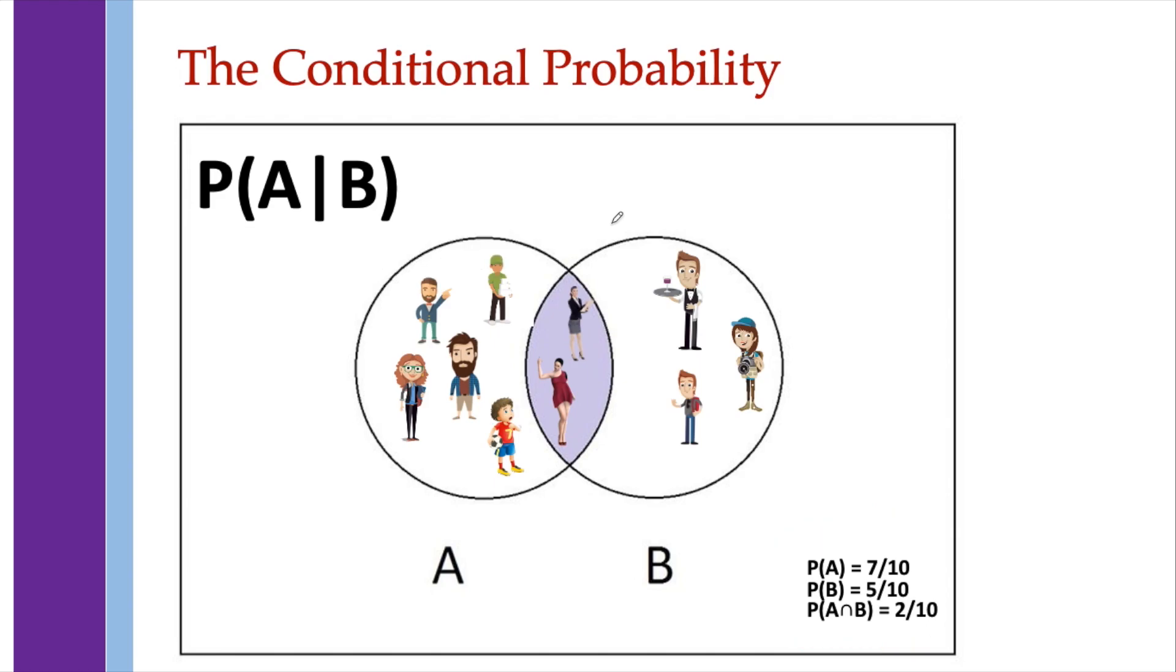So this indicates that since this is given, given those in B, meaning you're only going to consider these people who are in B, what is the probability that you're going to get a person or a member who are in A?